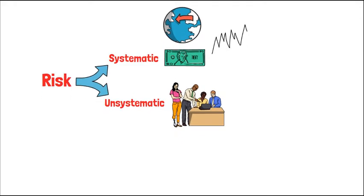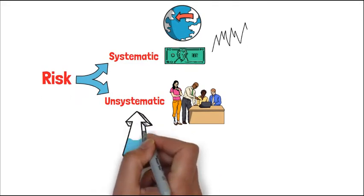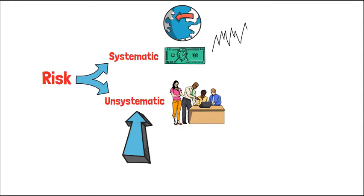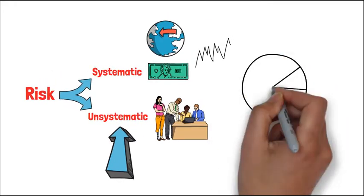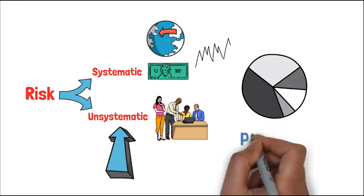Unsystematic risk is also known as internal risk or diversifiable risk. In other words, this risk can be mitigated by adding stocks from different industries into the portfolio.